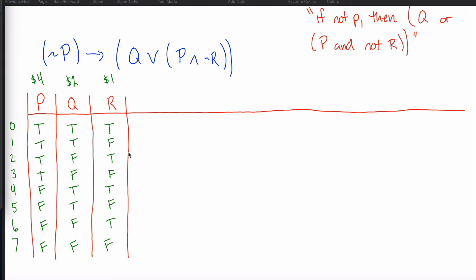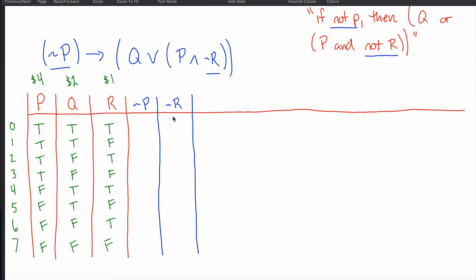Now I want to do my negations. Looking at the statement, I look for nots — specifically 'not R' and 'not P'. Note that nowhere does it say 'not Q', so I don't need a not-Q column. The only columns I need are not-P and not-R. For not-P, this references the P column, and negation just means write the opposite: a T in P means write an F in not-P.